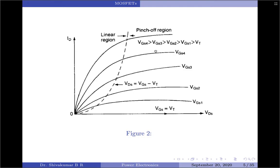When the gate-to-source voltage is increased beyond the threshold voltage, the drain current starts flowing. For small values of VDS — that is when VDS is less than VGS minus VT — the drain current is almost proportional to the drain-to-source voltage. Consequently, this mode is called the ohmic mode or linear region of operation. In power electronic applications, a MOSFET is operated either in the cut-off or in the ohmic mode. The slope of the VDS versus ID characteristics in this mode is called the on-state resistance RDS(on). Note that this resistance reduces with increased gate-to-source voltage.